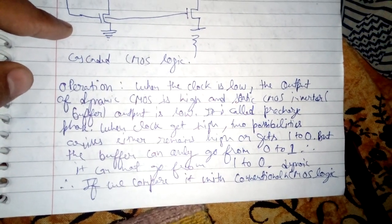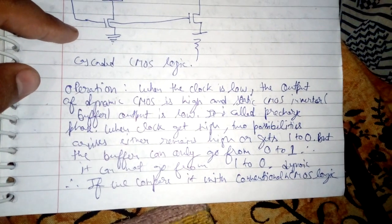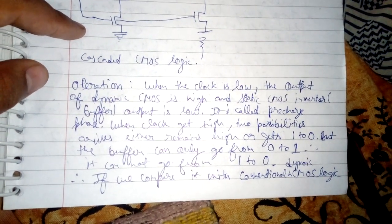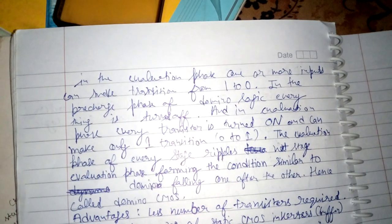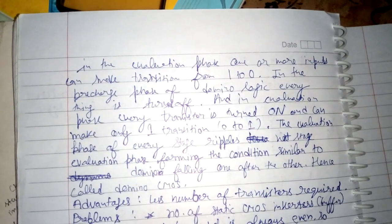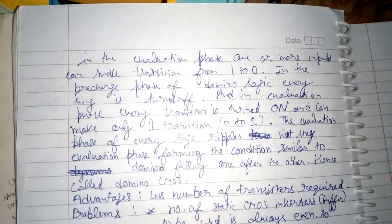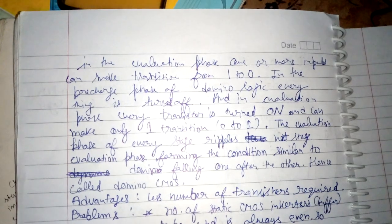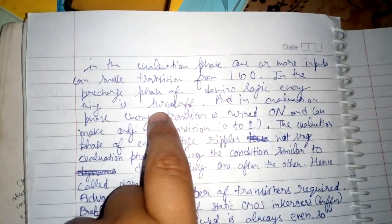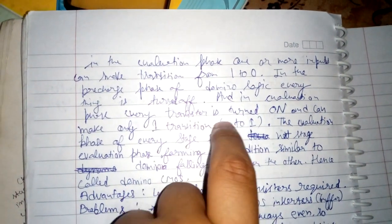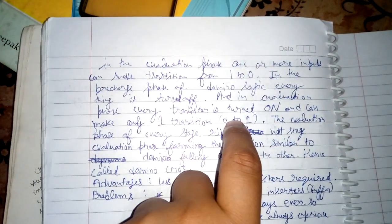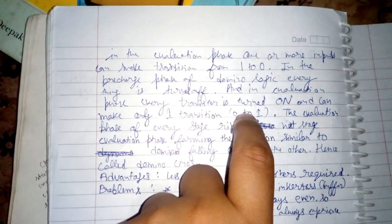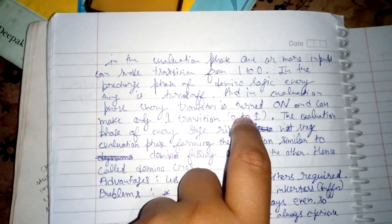Comparing Domino CMOS logic with conventional dynamic CMOS logic: in the evaluation phase of conventional dynamic CMOS logic, one or more inputs can make a transition from 1 to 0. But in the case of Domino logic, when the pre-charge phase is active, every transistor is turned off, and in the evaluation phase every transistor is turned on and can make only one transition — 0 to 1 — compared to conventional dynamic CMOS logic, which can make two transitions: either 0 to 1 or 1 to 0.